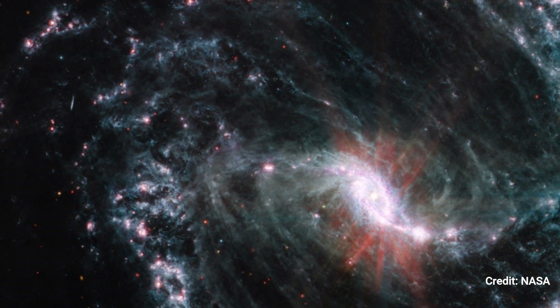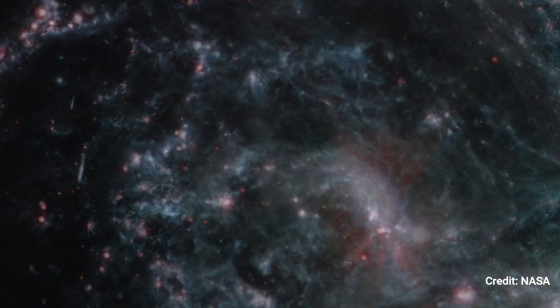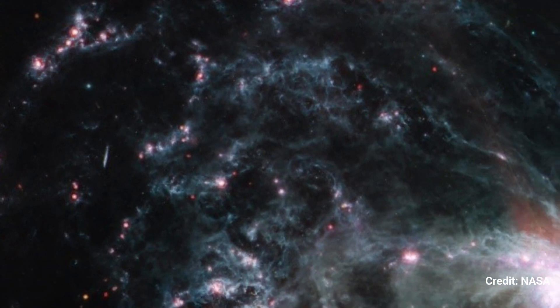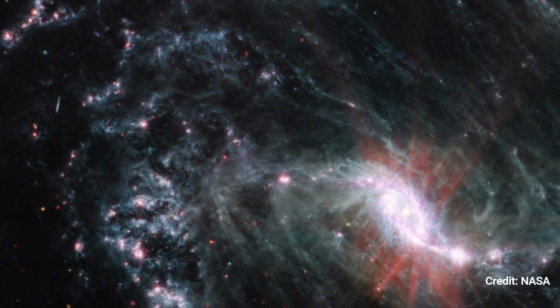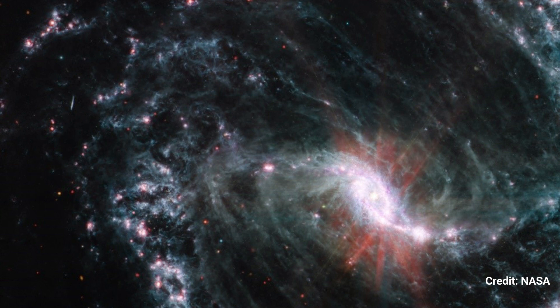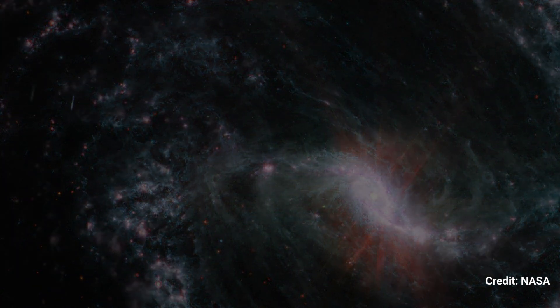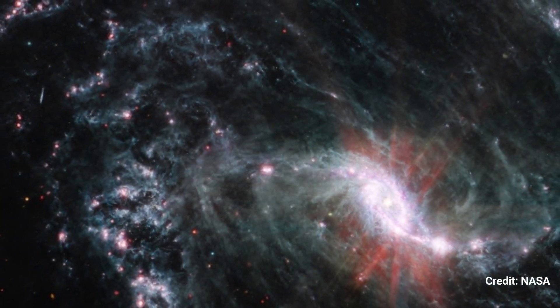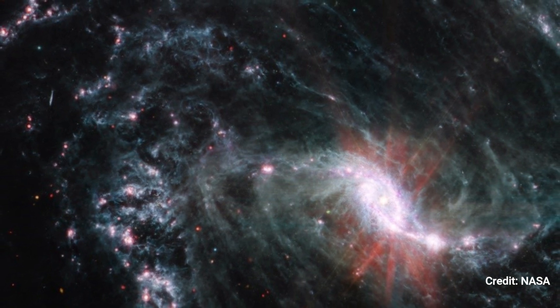In the MIRI observations of NGC 1365, clumps of dust and gas in the interstellar medium absorbed light from forming stars and emitted it back out in the infrared, illuminating an intricate network of cavernous bubbles and filamentary shells formed by young stars releasing energy into the galaxy's spiral arms.